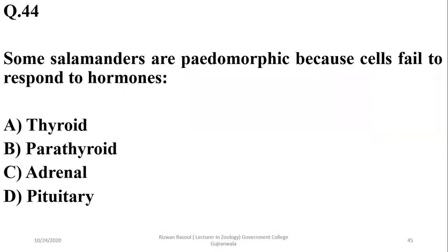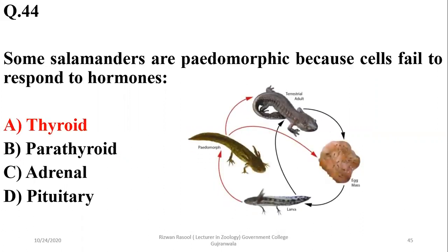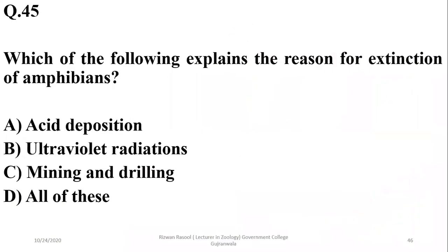Some salamanders are pedomorphic — they reach sexual maturity even while at larval stages because cells fail to respond to thyroid hormones. Pedomorphosis is very common in salamander species.